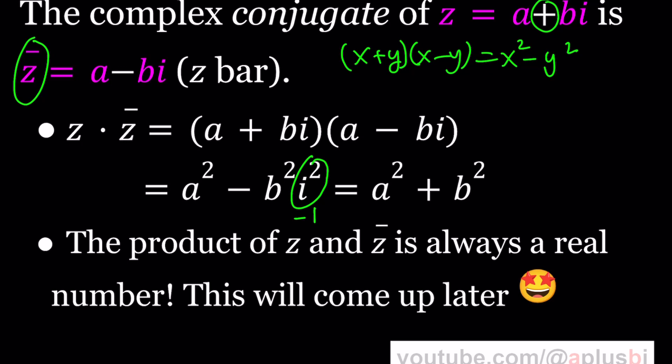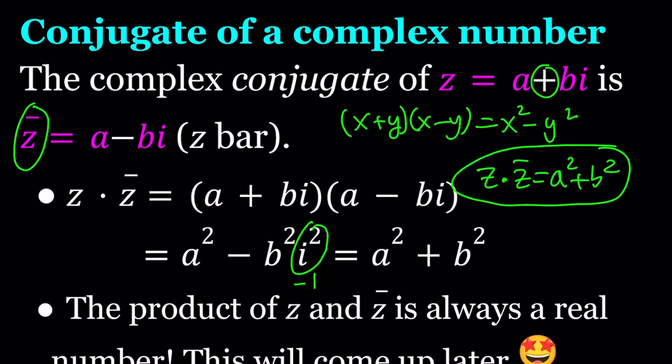So here's one lesson that we should take away from here. The product of Z and Z bar is always a real number. And that's going to come up in a little bit, obviously. And that's a very important product. Make sure to remember this. So let's kind of summarize what this means. It just says Z times Z bar is A squared plus B squared. But what is A and B? A and B are the real and the imaginary parts of a complex number, which is written as A plus B i. Hopefully, everything is good so far. Let me know if you have any questions in the comment section.